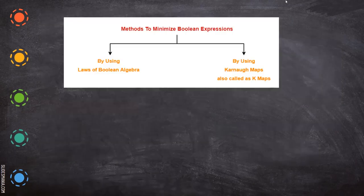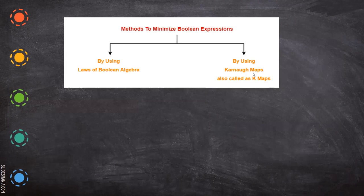Coming to our main point — why we go for the Karnaugh map. In order to minimize the expression, there are two methods: one is using the tabular method and another is using the laws of Boolean algebra. In the tabular method there are two types: one is the Karnaugh map and another is the prime implicant method. We have already seen Boolean algebra; now in this video we are going to see the Karnaugh map.